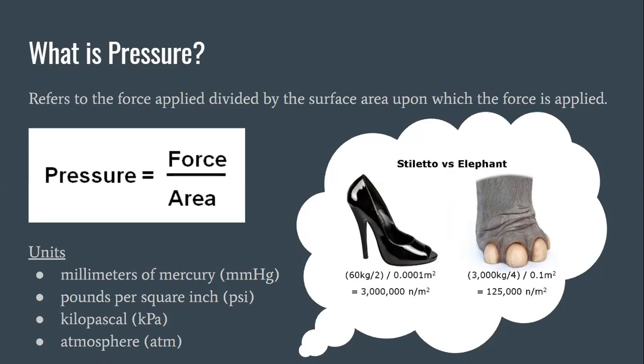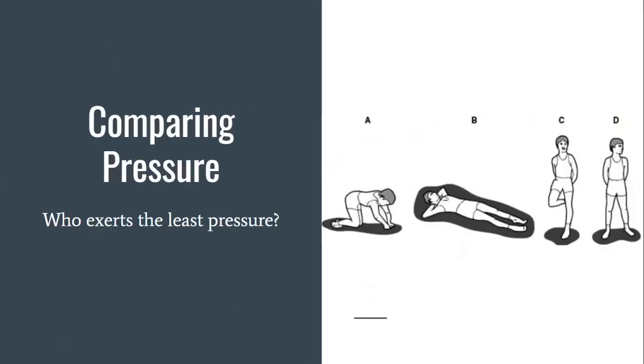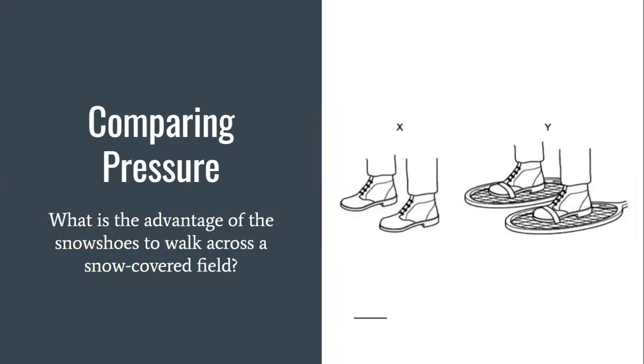That just kind of helps you understand the difference between the pressure in relation to the area, that surface area. So we're going to do a couple practice problems with that. The first is looking at these four people to the right A, B, C, and D, who exerts the least pressure? If you said person B you were correct. Since they are laying down they have the greatest surface area. So they're going to exert the least amount of pressure on the ground.